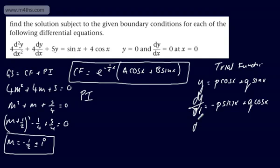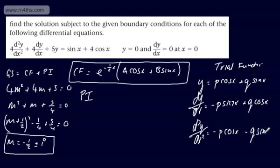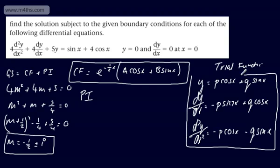Taking the second derivative, d²y/dx² = −p cos x − q sin x. These are the values we need to substitute into the differential equation to find our particular integral. We need 4 of the second derivative, 4 of the first derivative, and 5 of y.